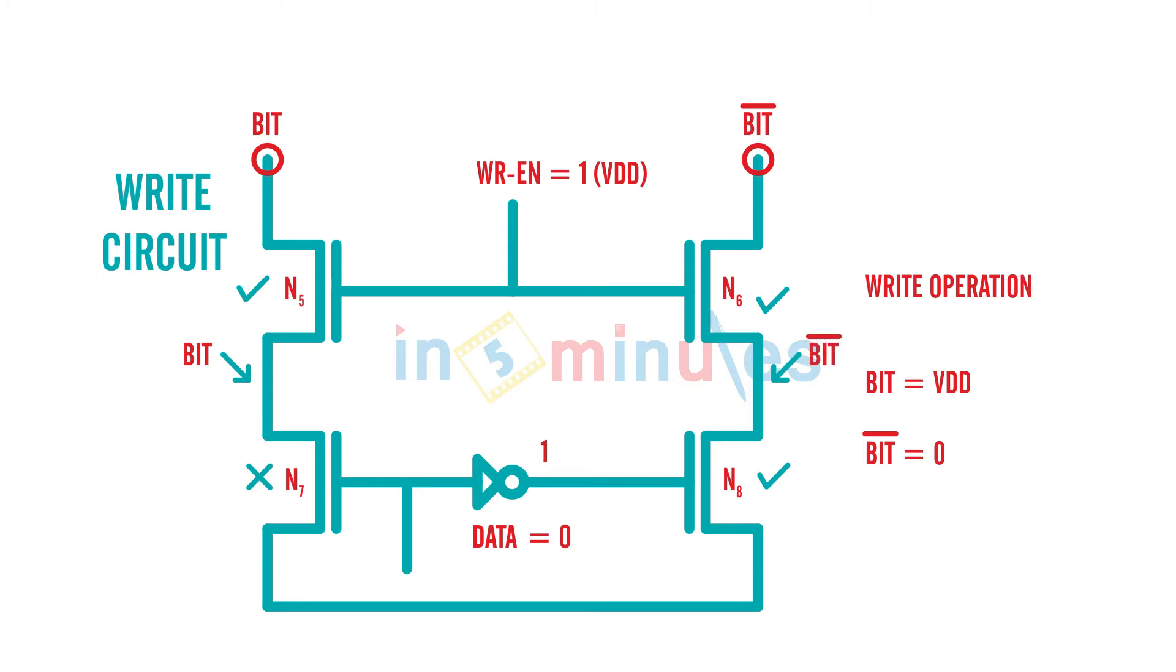Because N7 is off, this bit line which was through the precharge circuit and N6 transistor charged to logic one will not have a path to discharge and will stay at logic value 1. And this point, because N8 is grounded, bit bar will go to zero.